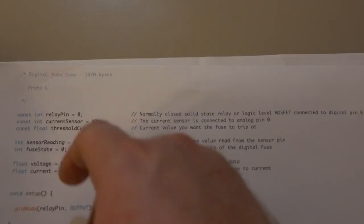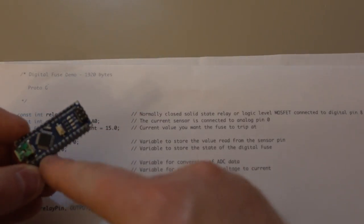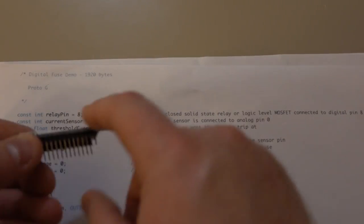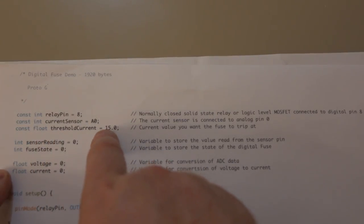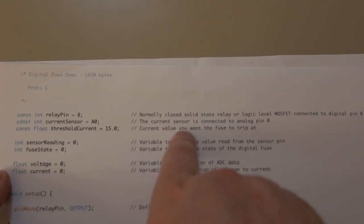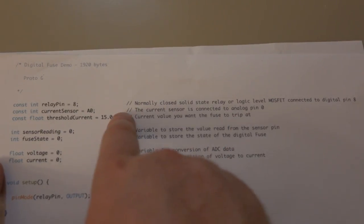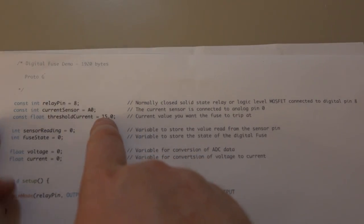Current sensor A0, we're using the analog input pin A0. Constant float threshold current equals 15. This is just the current value I want the fuse to trip at, and you can change that to 8 amps, 5 amps, whatever you want that to be.